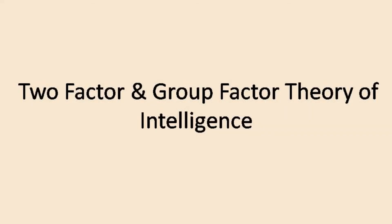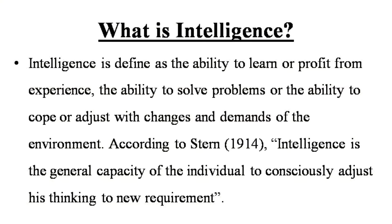Welcome back. In this video we are going to learn two theories of intelligence: the first will be two-factor theory of intelligence and the second will be group factor theory of intelligence. The definition of intelligence is very complex, yet in simple terms intelligence is defined as the ability to learn or profit from experience, the ability to solve problems, or the ability to cope or adjust with changes and demands of the environment. According to Stern (1914), intelligence is the general capacity of the individual to consciously adjust his thinking to new requirements.